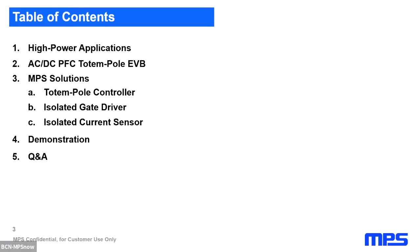The agenda for today: first, we are going to review high power AC-DC applications in which different topologies are used. Then we are going to review the three kilowatt AC-DC solution we have done in MPS, and then we will go in more detail on the specifications of the different devices — the totem pole control, isolated gate driver, and isolated current sensor. Finally, we will do a live demonstration with our evaluation board, and at the end there will be time for Q&A.